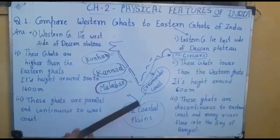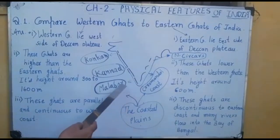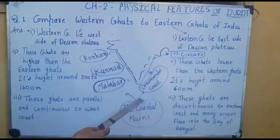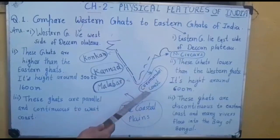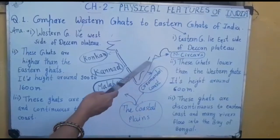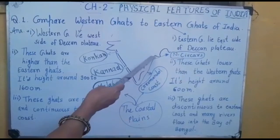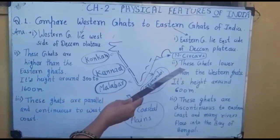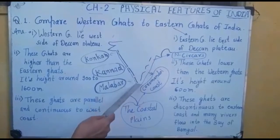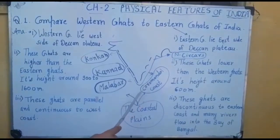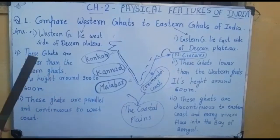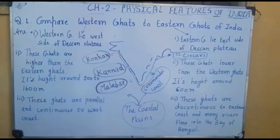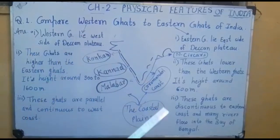Moving towards the eastern coastal plains — there are many gaps and many rivers flowing towards the Bay of Bengal. There are only two eastern coast divisions. The first covers the Odisha and Jharkhand area, called the Northern Sarkars. Moving downwards, the eastern coastal plains are called the Coromandel Coast.